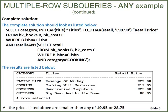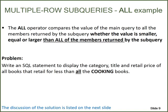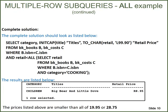The ALL operator compares the value of the main query to all the members returned by the subquery, whether the value is smaller, equal, or larger than all the members returned. The problem is to write an SQL statement to display the category, title, and retail price of all books that retail for less than ALL the cooking books. The solution is very similar to the previous one, but the clause says AND retail LESS THAN ALL (SELECT retail ...). The results show just one book, as the price must be smaller than all of $19.95 and $28.75.